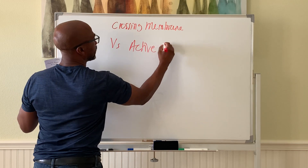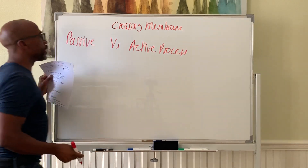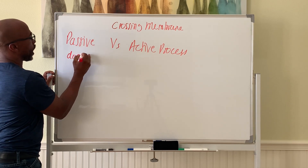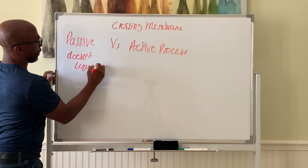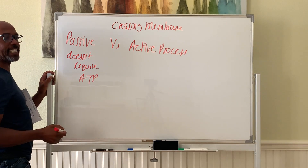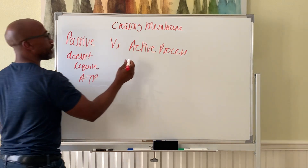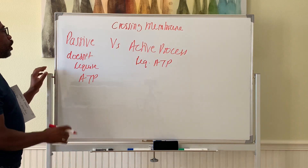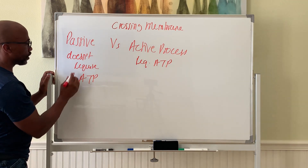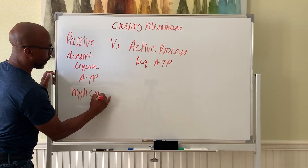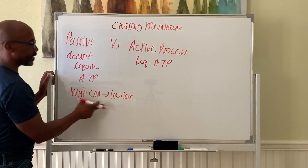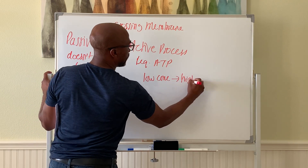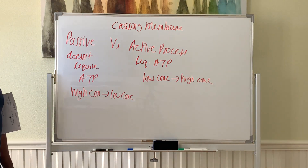The rule for defining passive versus active is that passive does not require ATP — no energy is expended to perform passive transport. Active processes require ATP to be broken down and energy to be expended. In general, passive transport moves things from high concentration to low concentration — that's called moving down-gradient — while active transport goes from low concentration to high concentration.